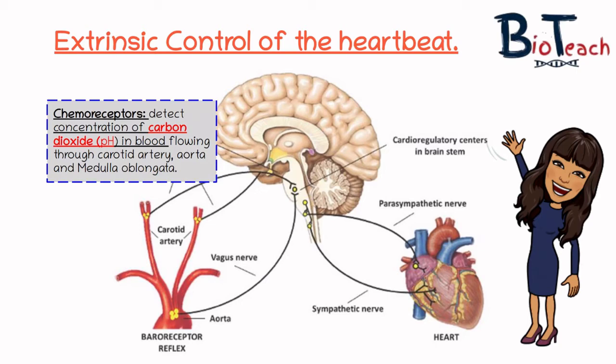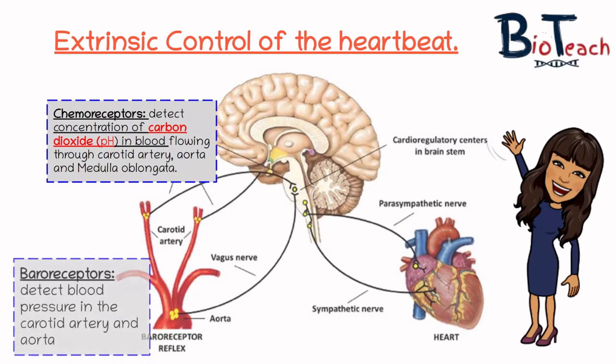At both sites, chemoreceptors are sensitive to carbon dioxide concentration in the blood. Some textbooks also refer to pH, because as CO₂ concentration increases, blood pH decreases, becoming more acidic. Baroreceptors, another set of receptors, are sensitive to blood pressure. They are found in various arteries but are particularly concentrated in the carotid sinus, close to the carotid body in the neck. These are stretch receptors — the higher the blood pressure, the higher the frequency of nerve impulses to the medulla. They form part of a negative feedback system that prevents blood pressure from getting too high.